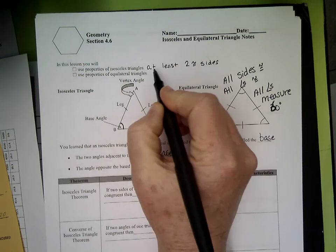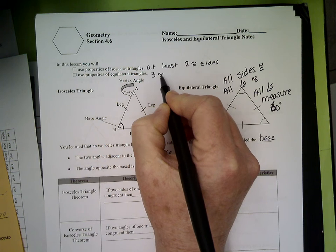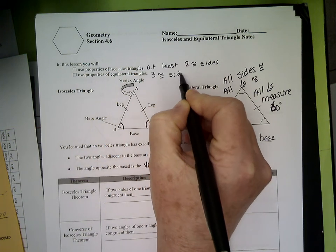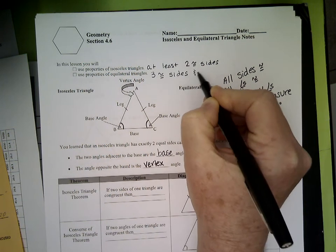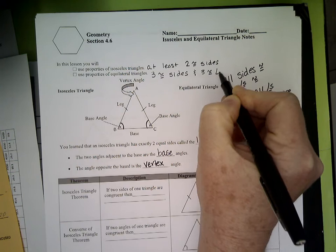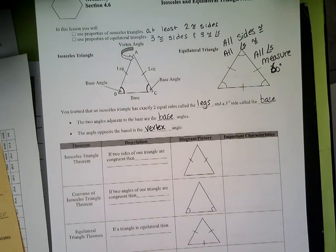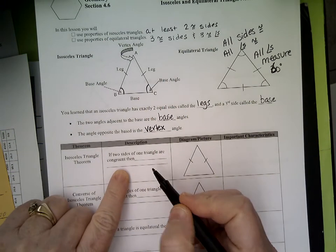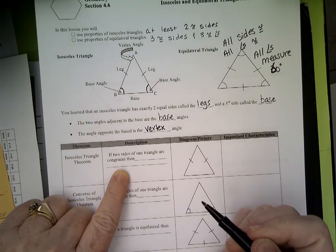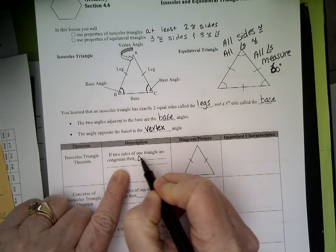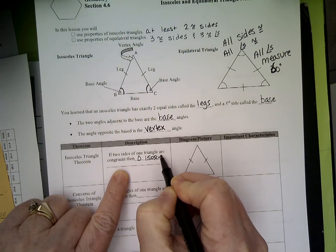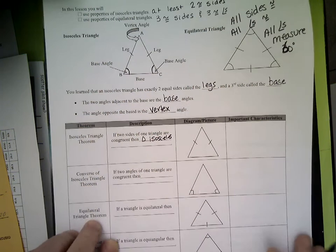Isosceles triangle theorem: if two sides of one triangle are congruent, then the triangle is isosceles.